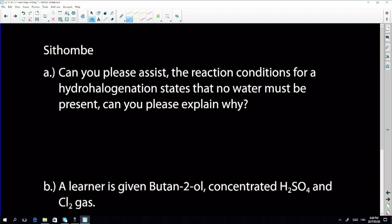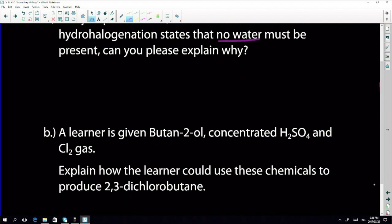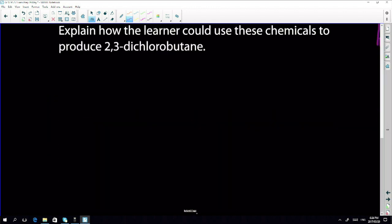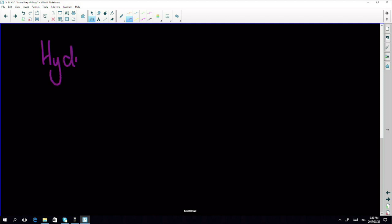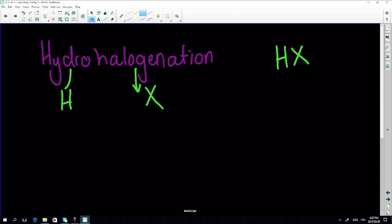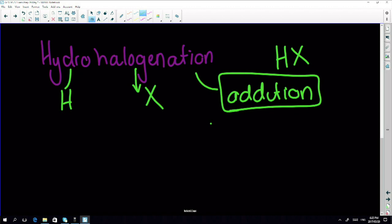Now you asked us, Satombe, can you please assist? Absolutely. The reaction conditions for hydrohalogenation state that no water must be present. Can you please explain why? With pleasure. I'm gonna just do it at the bottom here. Remember if I'm telling you that we're doing hydrohalogenation, it means that I'm adding in a hydrogen and I'm adding in a halogen, which we're going to call X. That means I've got to be using a hydrogen halide - the only way I can add in a hydrogen and a halogen to atoms is if I'm doing an addition reaction. So that means I have to start with something that is unsaturated - I have to start with an alkene or an alkyne.